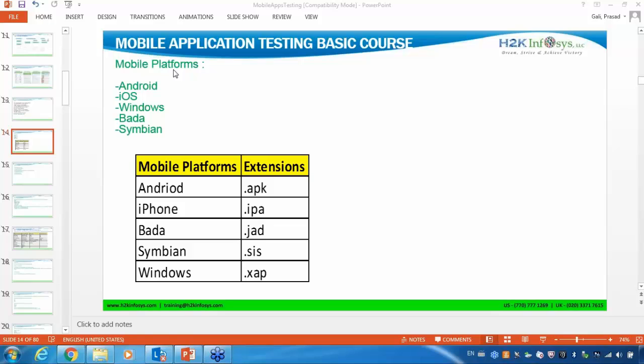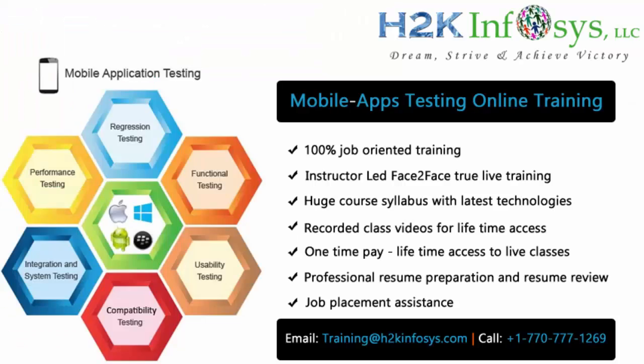iOS is only for your Apple products — iPhone operating systems — like iPhone and iPad. It's only for Apple products, not for anyone else, because iOS is specific to Apple products only. iOS examples include iPhone and iPad.